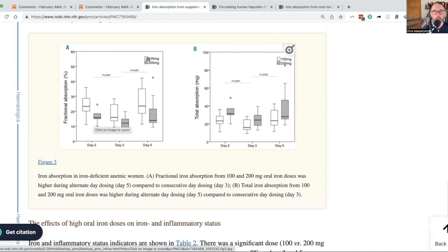100 milligrams is in white, 200 milligrams is shaded. On the left is the fractional absorption, which means the percentage of the supplement that was absorbed. On the right is the total absorption, which is the total number of milligrams of iron that entered your body after you consumed the supplement. Day two is the first supplement, day three is the day after, and day five is two days later.